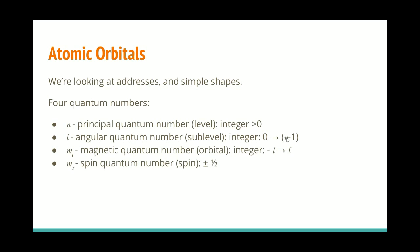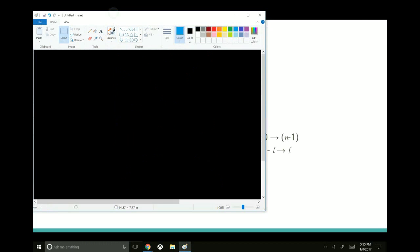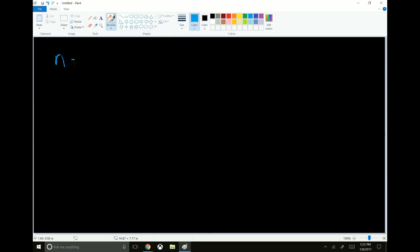I'm going to go ahead and write this down for the visual learners among you. If n equals zero, then l can equal zero. And, oh, sorry, if n equals one, l can only be zero. If n equals two, l can be zero, or it can be one. If n equals three, l can be zero, one, or two.